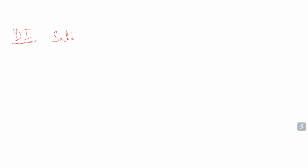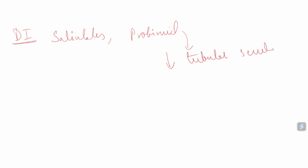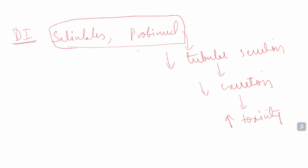There are certain drugs like salicylates and probenecid that will decrease tubular secretion, and with that they decrease the excretion of methotrexate. This increases the concentration of methotrexate in the body and potentiates toxicity. When methotrexate is given with aspirin or probenecid, these drugs decrease the excretion of methotrexate, the concentration increases, and toxicity is potentiated.